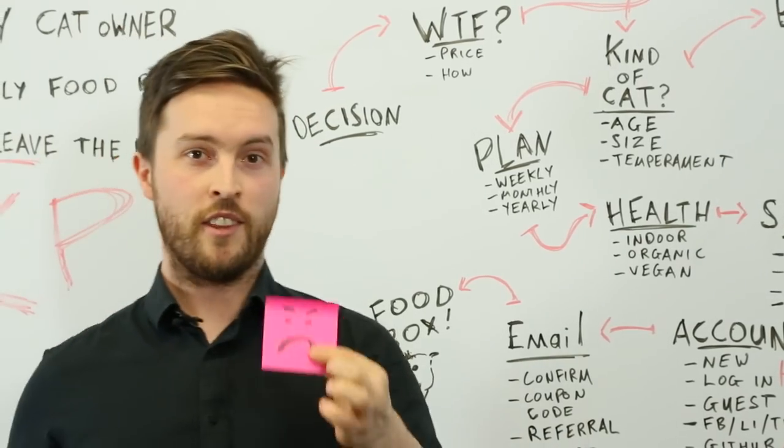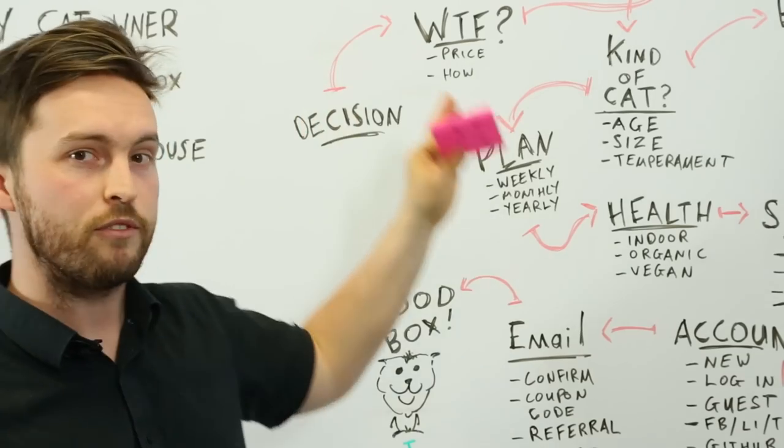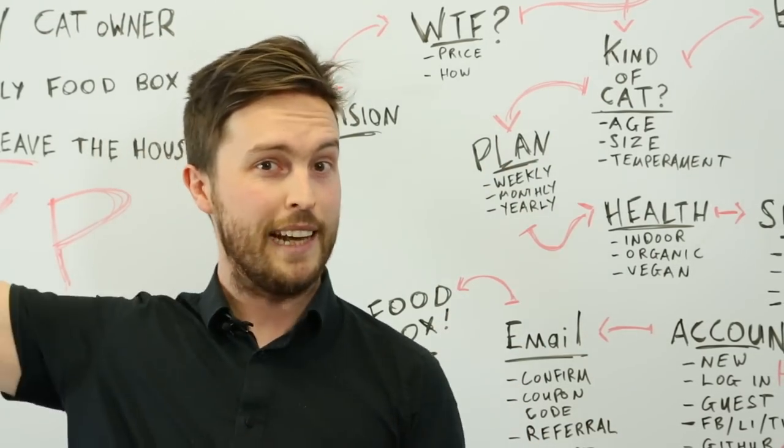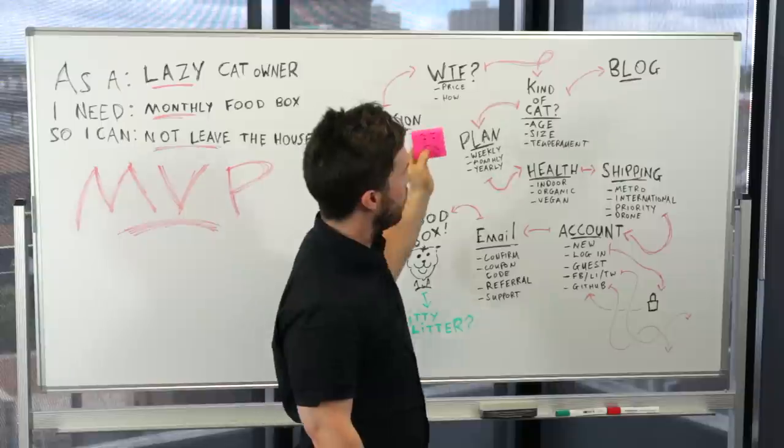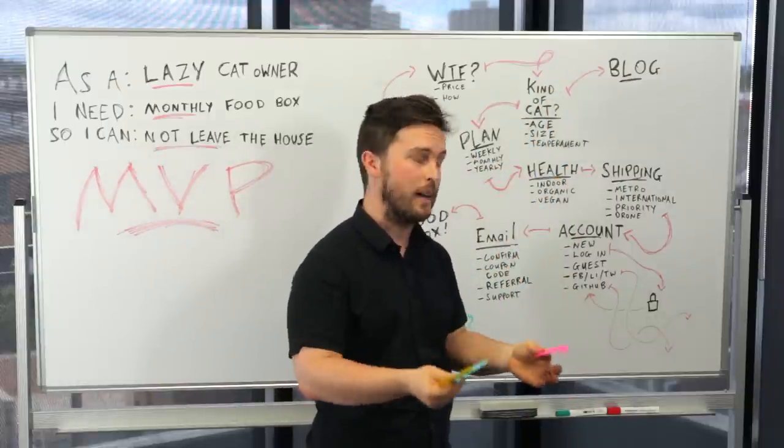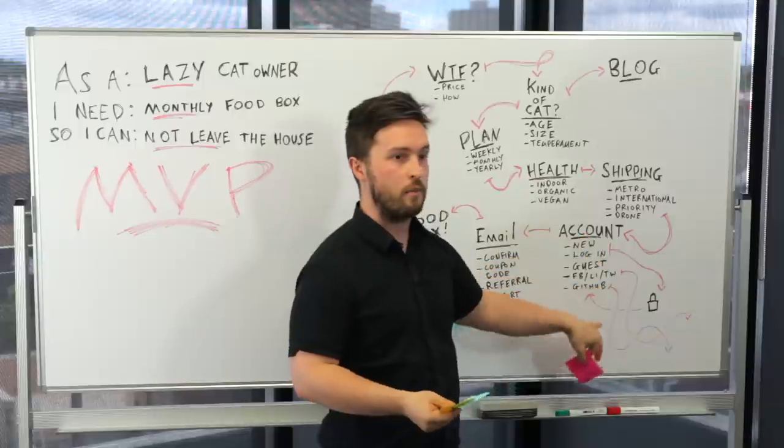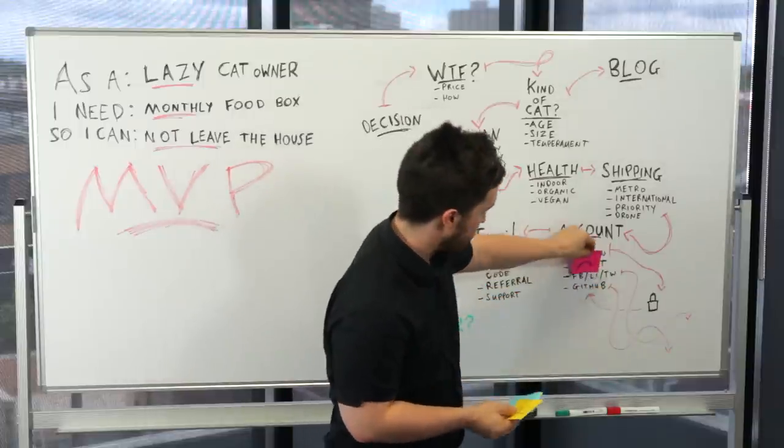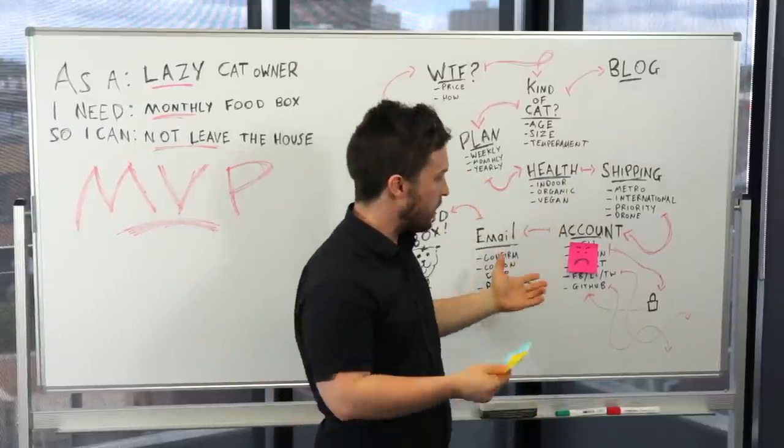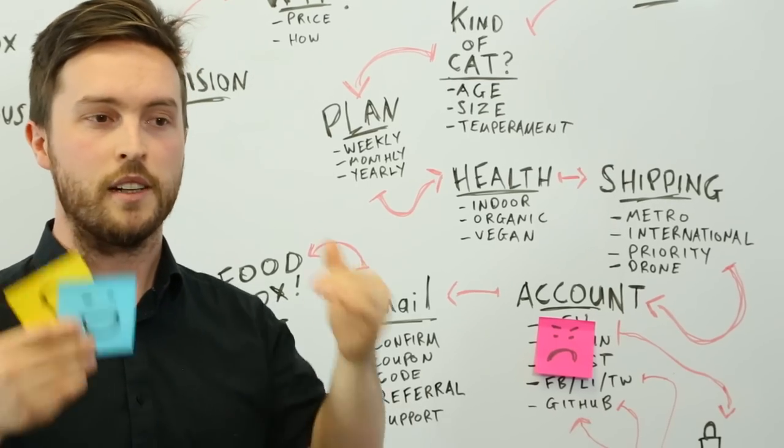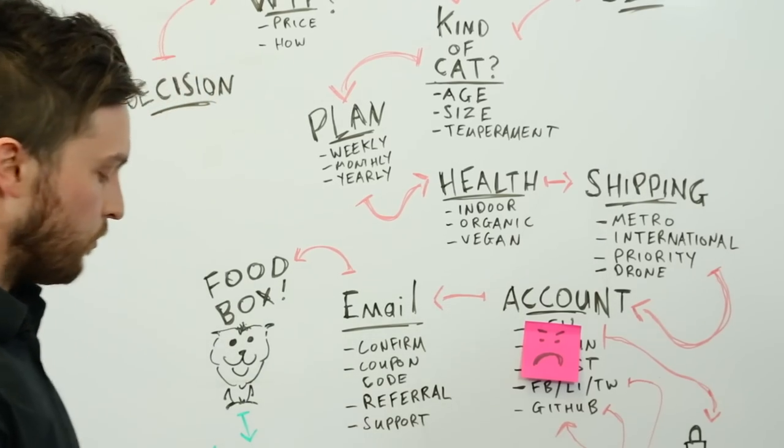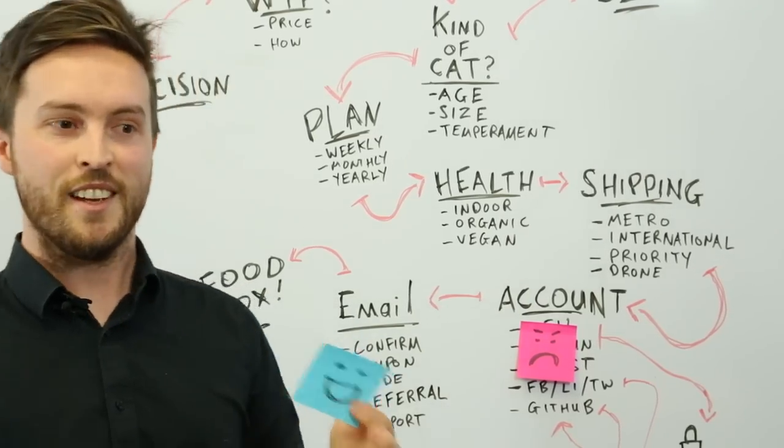Sad faces are for things that users hate. So going through the flow, is there anything here that users are just not going to care about, particularly lazy cat owners. The blog, I don't know who really cares about a blog that doesn't help me get food for my cat. The account step, this is really obviously to me something that doesn't make anybody happy. Maybe GitHub or Facebook logins are going to be useful but it doesn't get me any nearer to my goal as a user of getting cat food.